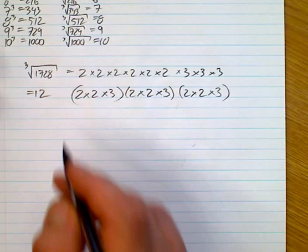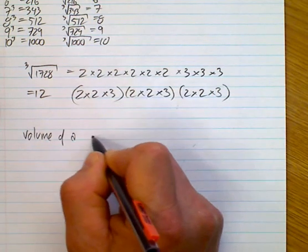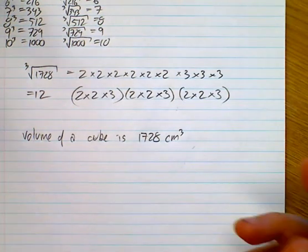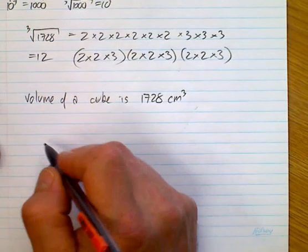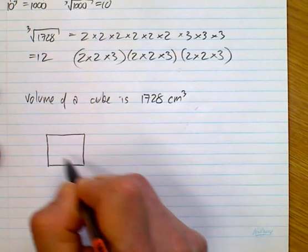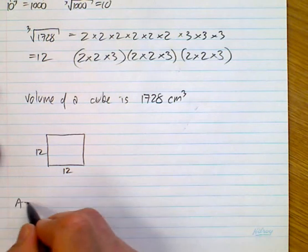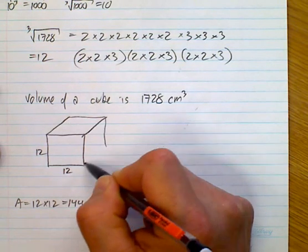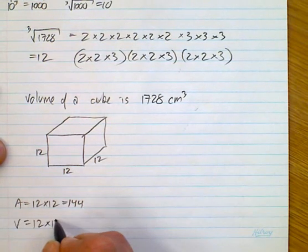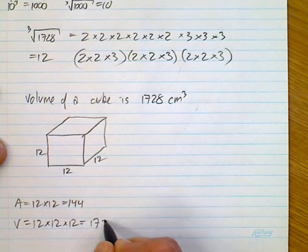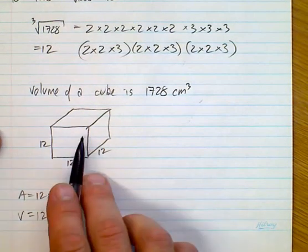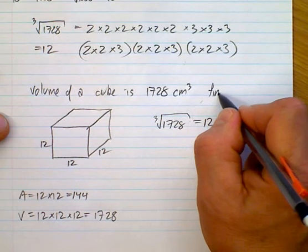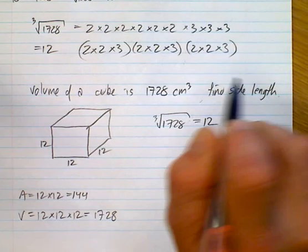The type of question you might have is: the volume of a cube is 1728 centimeters cubed — find the side length. If you have a square that is 12 by 12, the area is 12 times 12, which is 144. If you add another dimension of 12, you multiply by another 12. So if you're given the volume and you know it's a cube, you just cube root 1728 to get 12 as the side length.